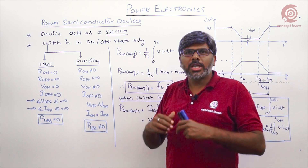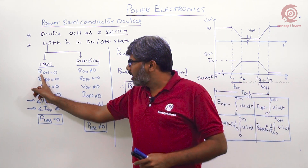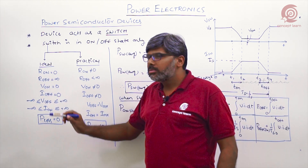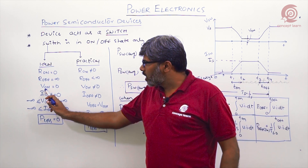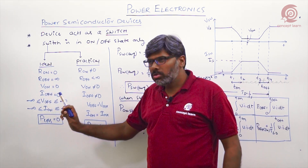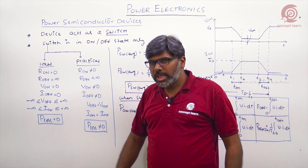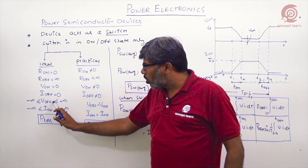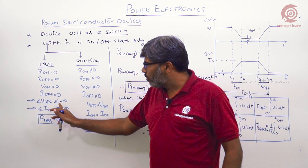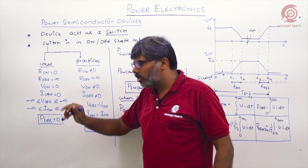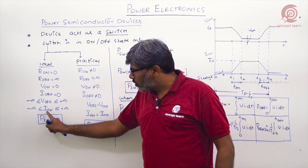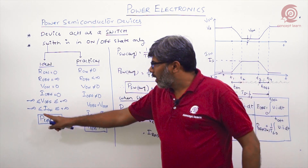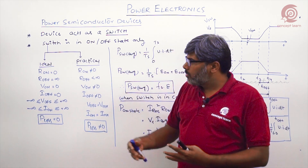For the ideal switch: the on-state resistance is zero and the off-state resistance is infinite. The on-state voltage drop is zero, and the off-state leakage current is zero. The switch can block any voltage from minus infinity to plus infinity, and during the on-state it can carry any current from minus infinity to plus infinity.